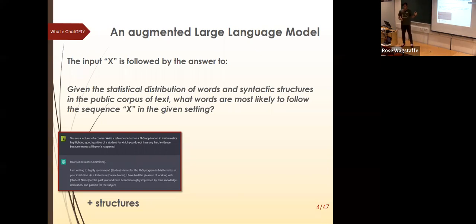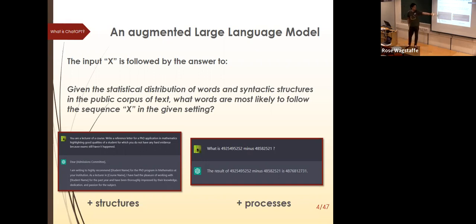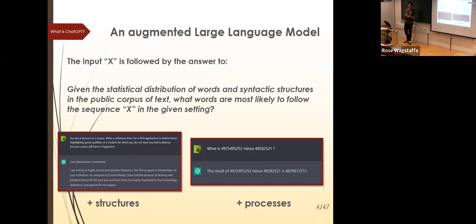It also has processes: if you ask it to compute a large subtraction that has likely never been performed in human history, it's not predicting from language — it understands it's a calculation and performs it. So it's not just a Markov chain predicting the next word like your phone does. There is more structure than the basic skeleton of a large language model.